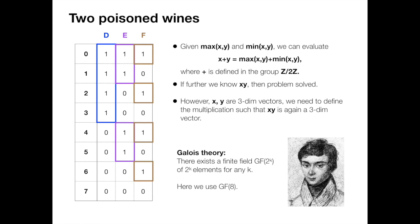The existence of such structure on this finite many elements is highly non-trivial. We are glad that Galois has developed the field for us, and here we are going to use GF(8) because we have only eight elements. So let's see how we can use Galois theory to find out the poison wines.